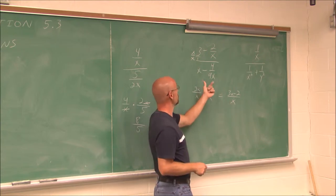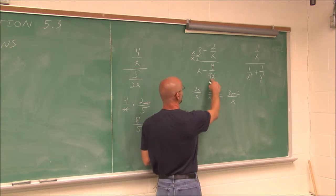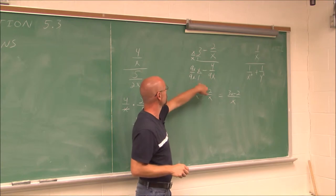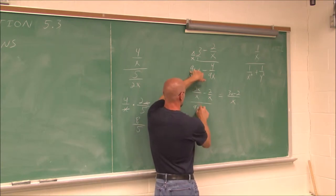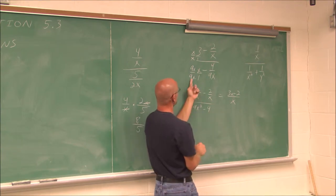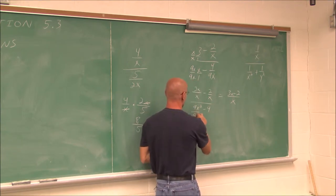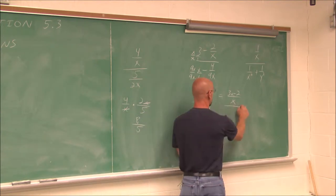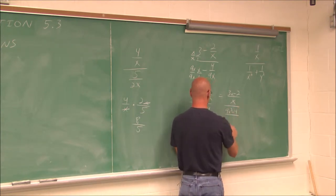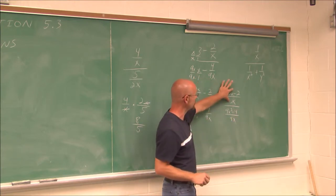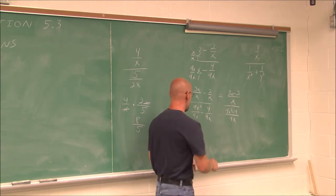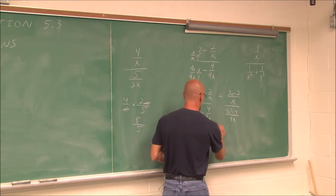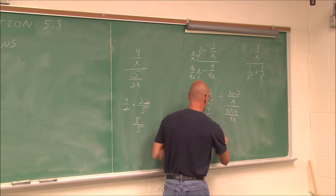Now we do the same thing to the denominator — write it as a single fraction. The common denominator is 9x, so I get 9x squared minus 4, all over 9x. Now I can rewrite this as (9x squared minus 4) over 9x. Since we have a single fraction divided by a single fraction, we multiply by the reciprocal: (3x minus 2) over x, times 9x over (9x squared minus 4).